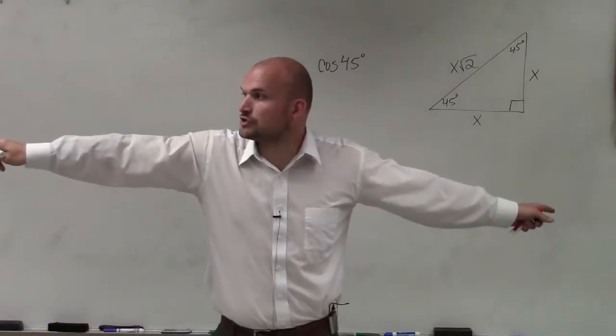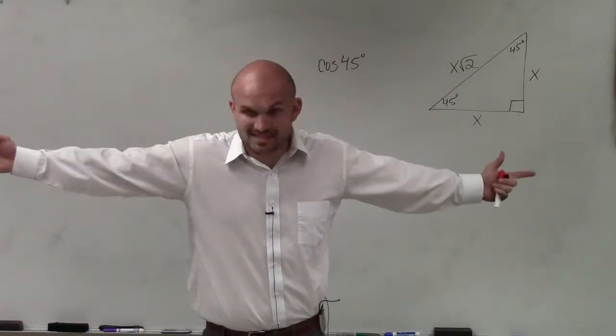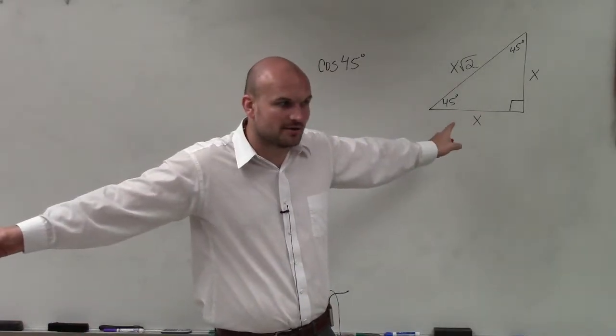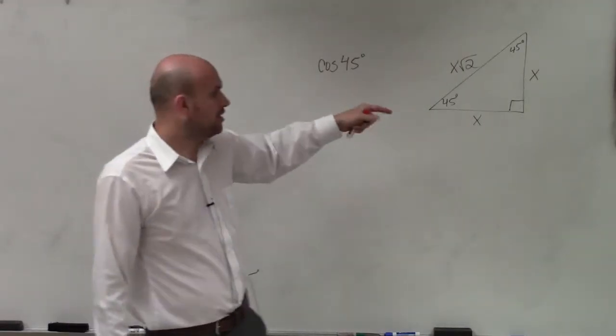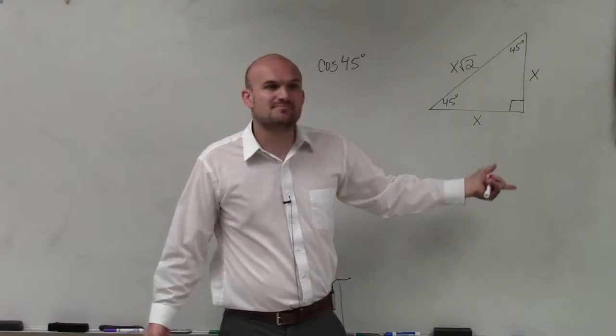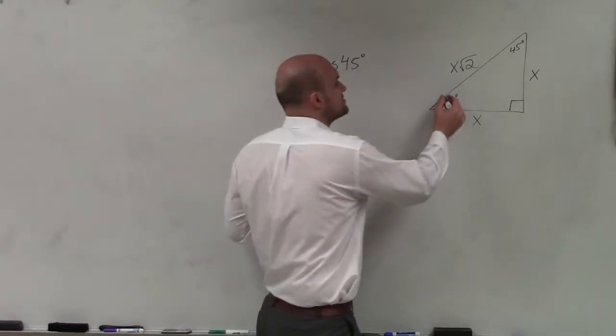That's how you guys did your first homework, page 101. That's how we did the first homework, we just used this triangle. Now they're asking us, what is the cosine of 45 degrees? Well, there's two 45 degree angles, so it doesn't matter which one we pick. I'll just pick this one.